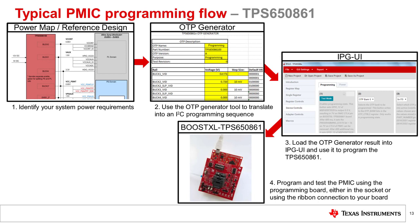As shown in the photograph, the TPS-650861 sample will be inserted into the socket of the BoostXL-TPS-650861 booster pack. The booster pack is situated on top of an MSP-430 launch pad, and the launch pad is connected to the computer running the IPGUI software with a USB-A to micro-B cable. The MSP-430 launch pad is configured to work as an adapter between the GUI and the booster pack. You can also use the included ribbon cable to connect the BoostXL-TPS-650861 board to your board for directly programming soldered-down samples.